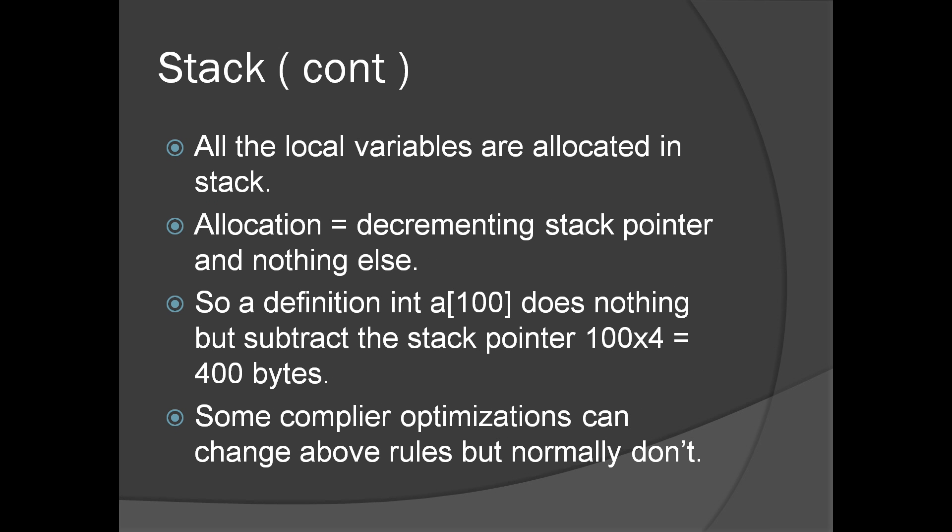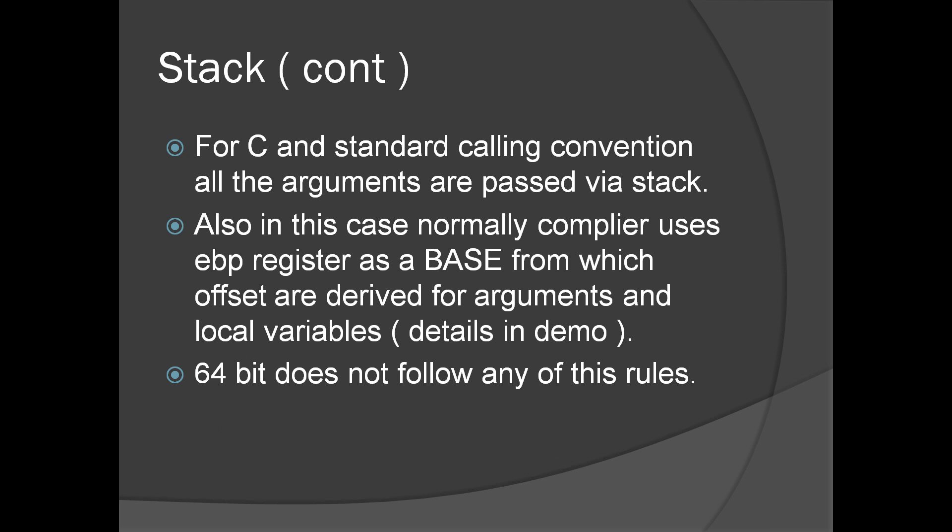So what is the use of the stack? All local variables are allocated in the stack — allocation is simply decrementing the stack pointer. A definition like int a[100], an array of 100, does nothing but subtract the stack pointer by 400 bytes (there can be compiler optimization, but in general this is correct). Stack is also used for passing arguments to a function in certain calling conventions like C calling convention and stdcall. In all types of calling conventions, the stack is used for passing arguments if the argument count exceeds a certain number. In the Microsoft C/C++ compiler, mostly for 32-bit code, EBP is used as the base from which offsets are derived for arguments and local variables.